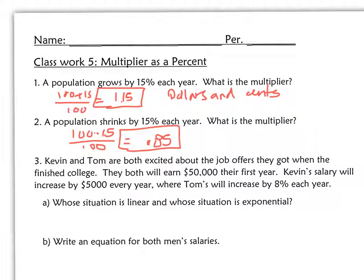Well, constant growth is linear. In other words, adding the same amount, positive or negative, in this case positive, it's increasing by $5,000 every year. So Kevin is linear. And 8% means we're going to multiply by 1.08, so it's going to be multiplied by a certain amount a year, which means it is exponential. And so Tom is exponential.